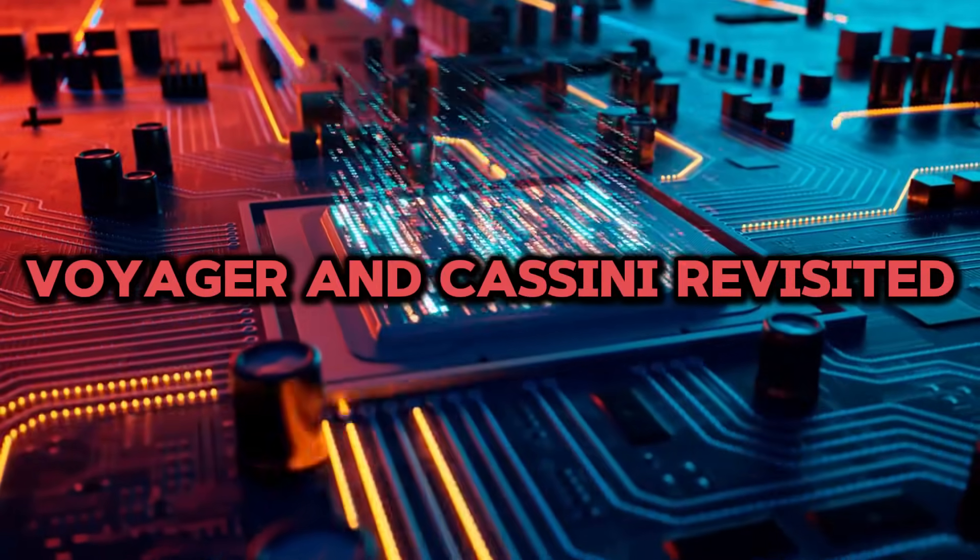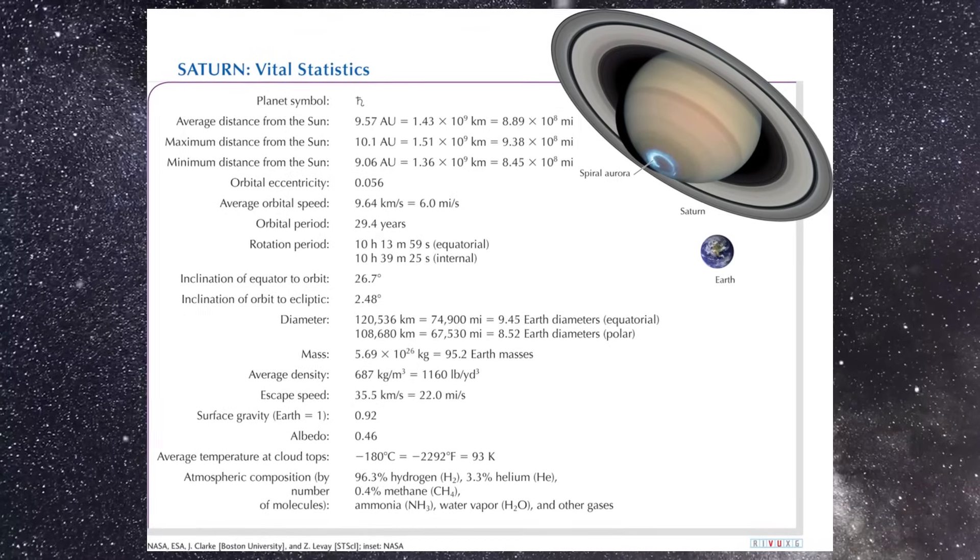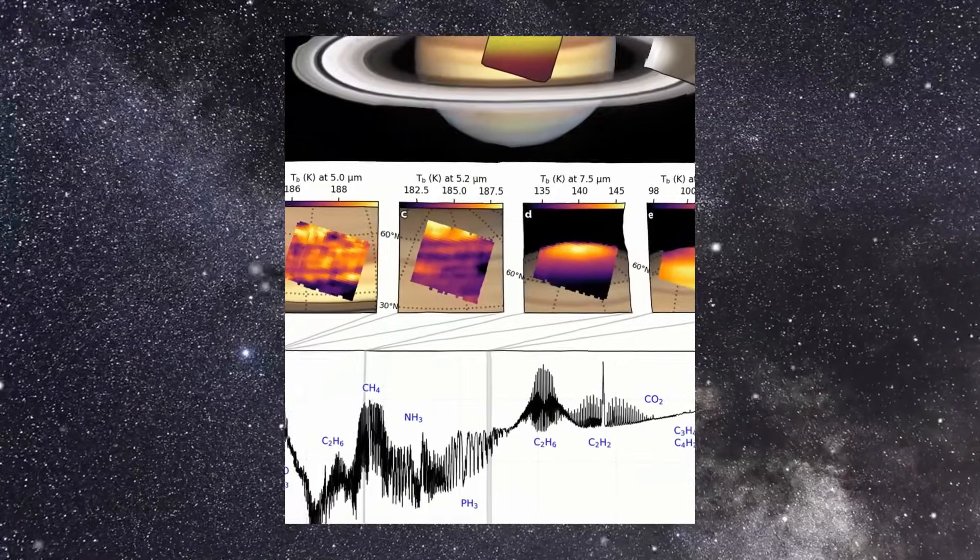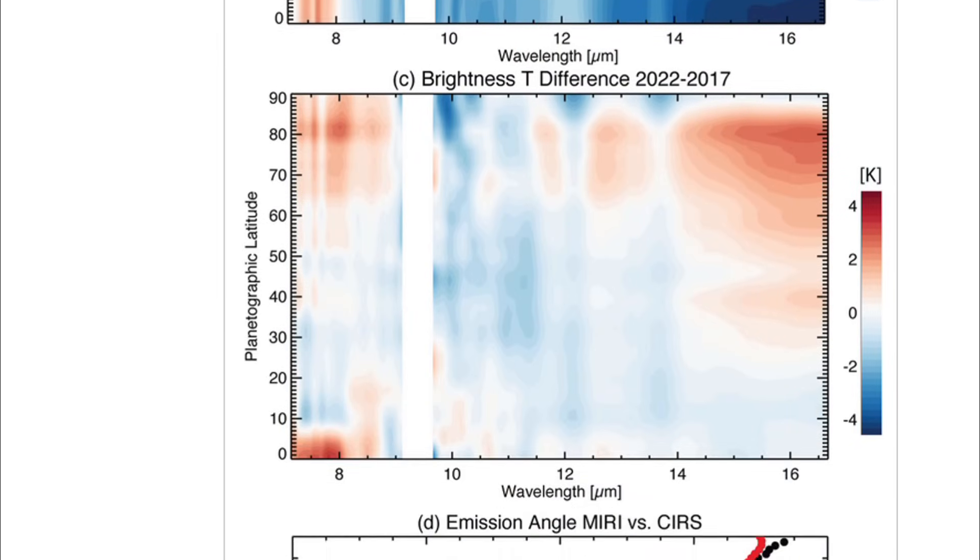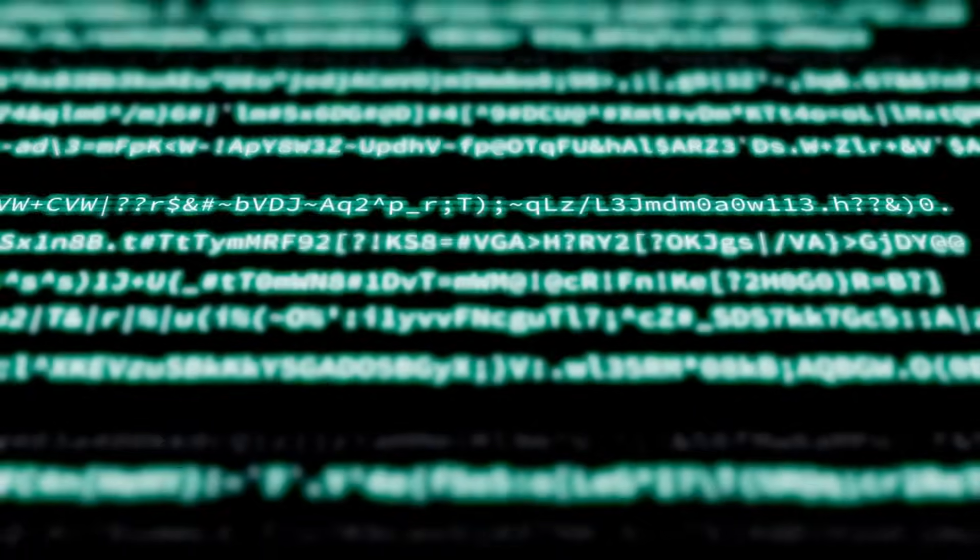This pattern didn't begin with Webb. Voyager 1's 1980 magnetometer data recorded unexplained oscillations near the F-ring, dismissed at the time as spacecraft interference.